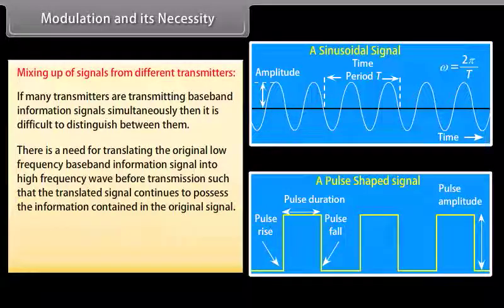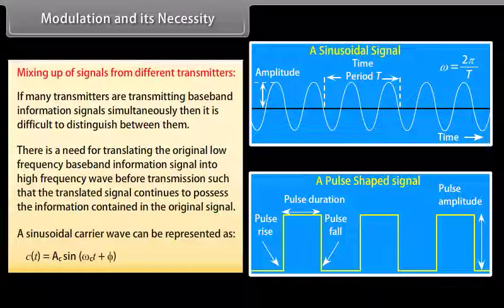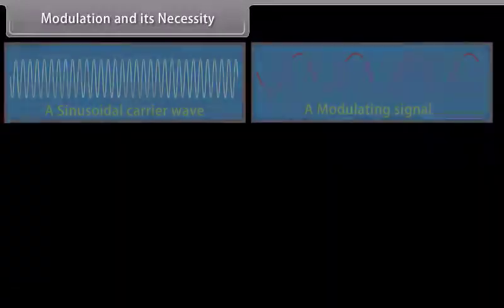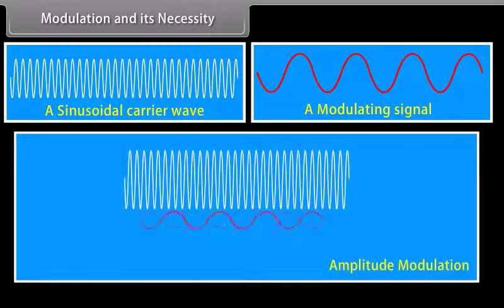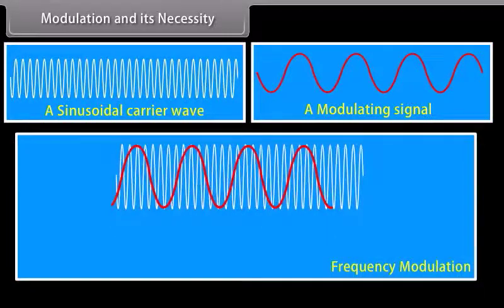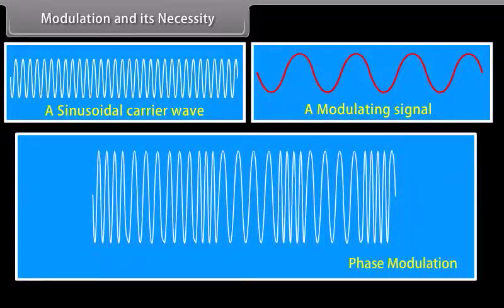Mixing up of signals from different transmitters: if many transmitters are transmitting baseband information signals simultaneously, it is difficult to distinguish between them. There is a need for translating the original low-frequency baseband information signal into a high-frequency wave before transmission, such that the translated signal continues to possess the information contained in the original signal. There are three types of modulation: amplitude modulation, frequency modulation, and phase modulation.